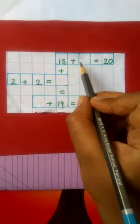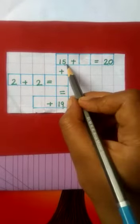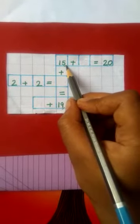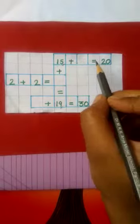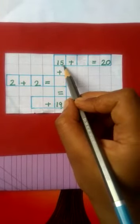15 plus dash is equal to 20. This is number 15. We have to add a number to 15 to make 20. Okay, this is number 15.